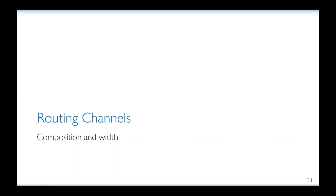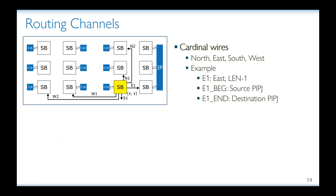Our second set of analysis targets routing channel composition and width. To analyze routing channels, Netcracker expects a description of one representative switch box, highlighted here in yellow. Then it identifies all the connections that emanate from it, along with the coordinates of the destination switch boxes. In Vivado, the PIP junctions connected to routing wires conveniently carry the name of the corresponding wire, and the wire names themselves hold information of their direction — such as north, east, south or west — and the length of the wire. For example, PIP junctions named E1-beg and E1-end would be at the two extreme ends of the wire named E1, which is heading east and terminating at a switch box one column away.